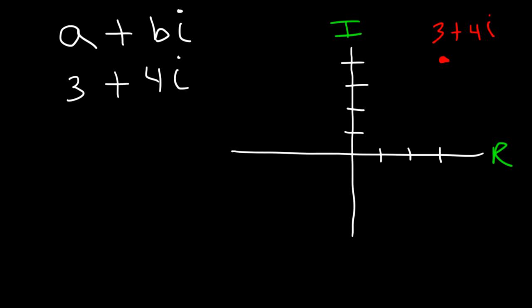Now let's try another example. Go ahead and plot 5 minus 2i. So we need to travel 5 units on the x-axis and down 2 units on the y. So this is 5 minus 2i.